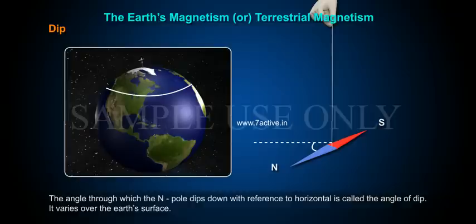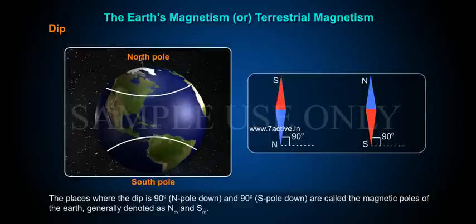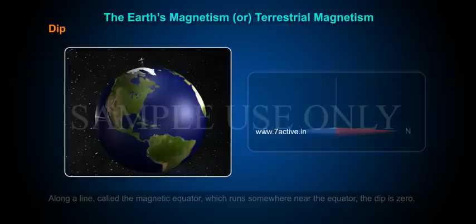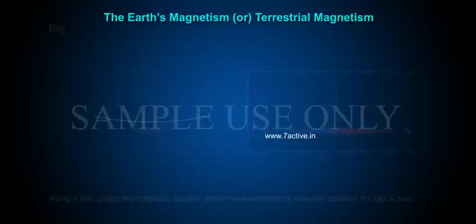It varies over the Earth's surface. The places where the dip is 90° north pole down and 90° south pole down are called the magnetic poles of the Earth, generally denoted as Nm and Sm. Along a line called the magnetic equator, which runs somewhere near the equator, the dip is zero.